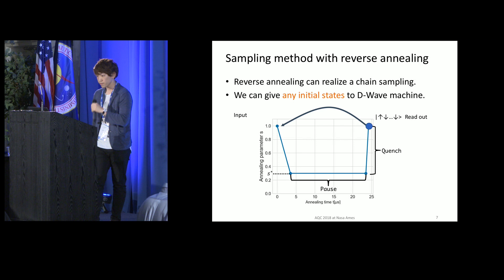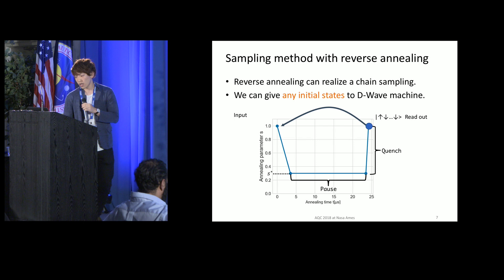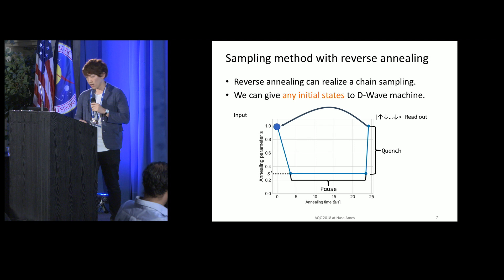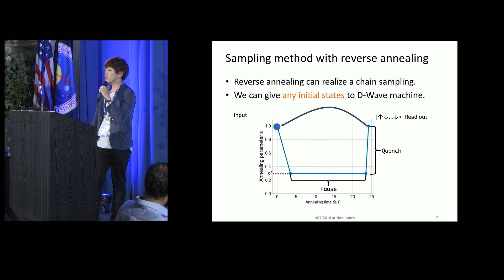We can obtain spin configurations and utilize this previous result as the next initial states. So reverse annealing can realize a chain sampling, and therefore we can realize a pseudo-Markov chain Monte Carlo. By using this sampling method, we sample spin configurations from the D-Wave devices.